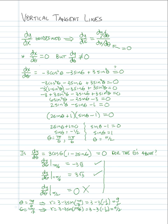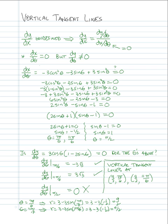We have vertical tangent lines at polar points (9/2, 7π/6) and (9/2, 11π/6). These can be converted to rectangular coordinates using x = r·cosθ and y = r·sinθ. That concludes the discussion on derivatives, slopes of tangent lines, and finding vertical and horizontal tangent lines of polar graphs. Good luck on your homework.